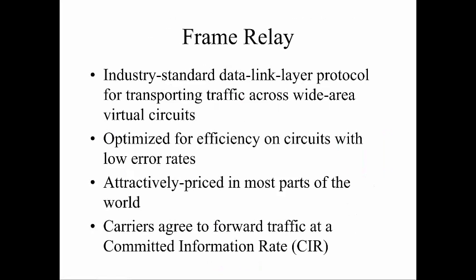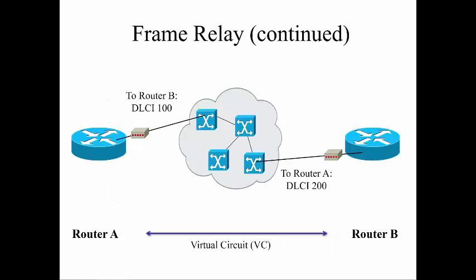Frame Relay still exists for a while and is done at the data link layer. It transports traffic across wide area virtual circuits and is being replaced by MPLS and Metro Ethernet. Carriers agree to forward traffic at a Committed Information Rate (CIR) — basically you guarantee a certain amount of speed based on your service contract. The ISP handles the virtual switch network in the center; as long as traffic gets through their network to our destination, that's what we care about.